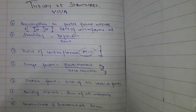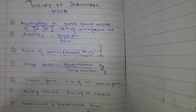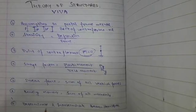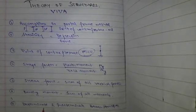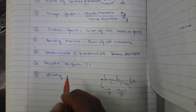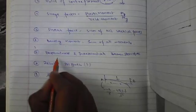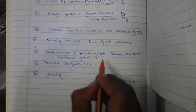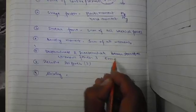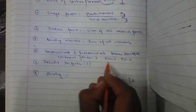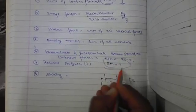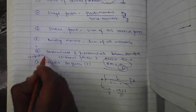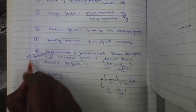Determinate and indeterminate beam, or we can say indeterminate or determinate structures. Determinate structures are those which have number of unknown forces equal to 3. They can be solved by three equations: Sigma H equals zero, Sigma V equals zero, and Sigma M equals zero. That is known as determinate structures. And indeterminate structures which have unknowns greater than 3. That is known as indeterminate structures.